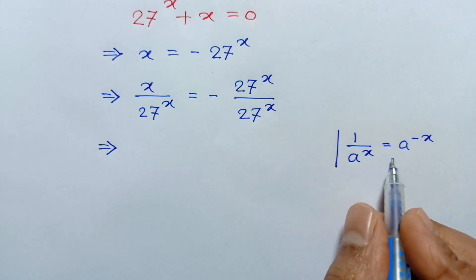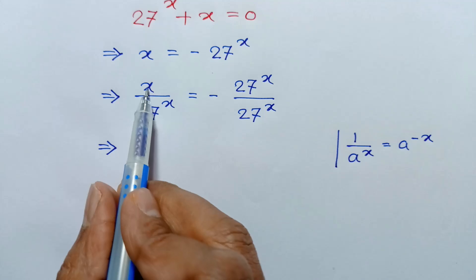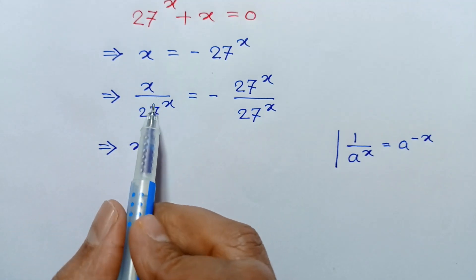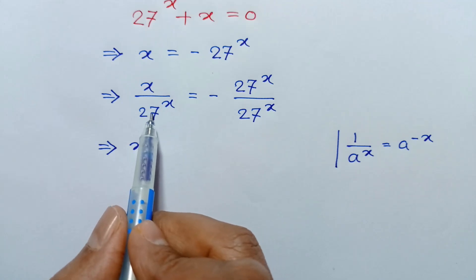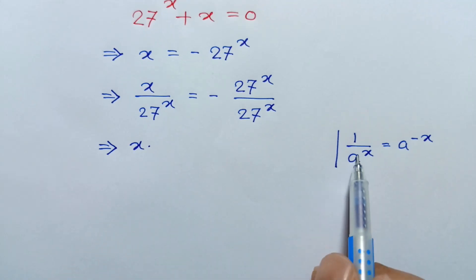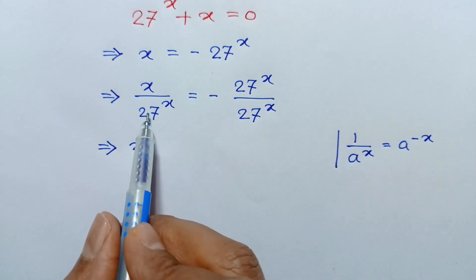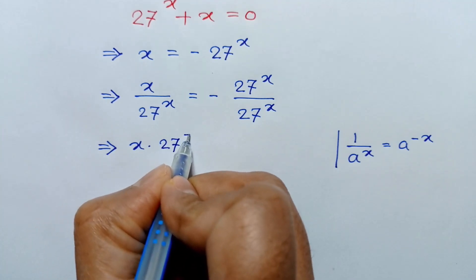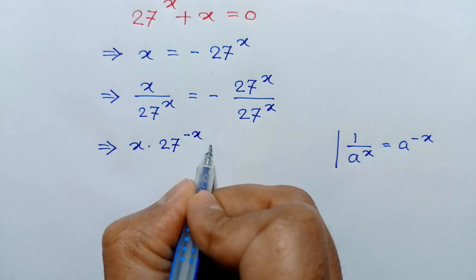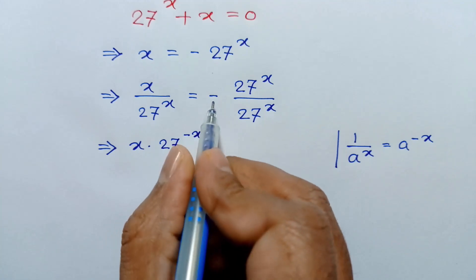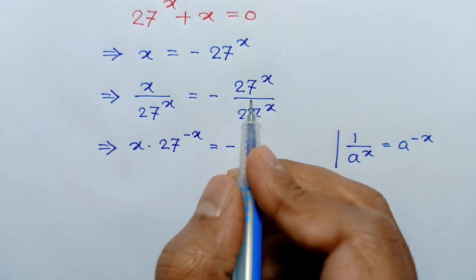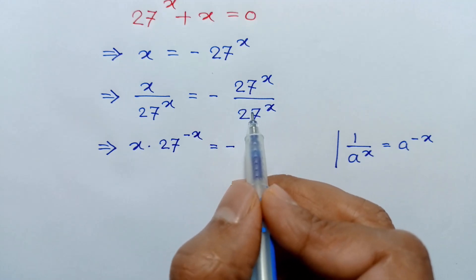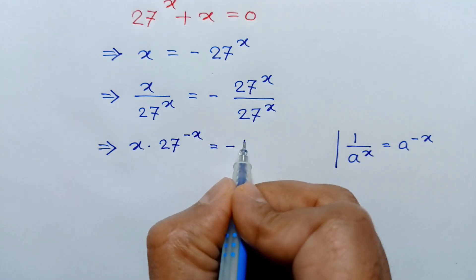Applying this formula, x times 1 over 27 to the power x can be written as x times 27 to the power negative x, which equals negative 1, since 27 to the power x divided by 27 to the power x is 1.